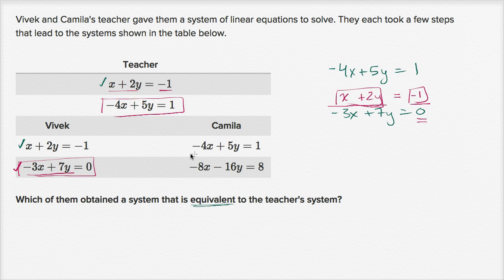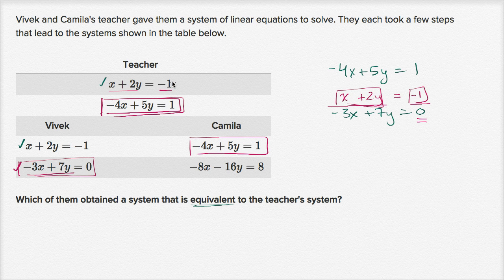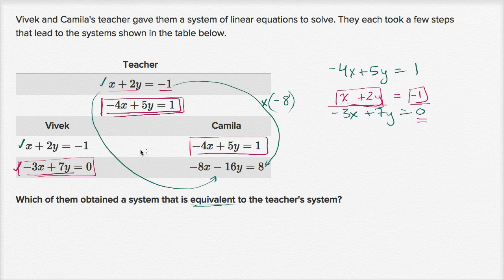Now let's look at Kamala. Her first equation is the exact same equation as the teacher's second equation. For her second equation, it looks like she just multiplied both sides by a number — specifically negative eight. Negative one times negative eight is positive eight. Negative eight times x is negative eight x, and negative eight times two y is negative sixteen y. So she multiplied both sides by the same value, which doesn't change the equation. It changes the way it looks, but it represents the same line. So this is definitely still an equivalent system with the same constraints and the same solution.